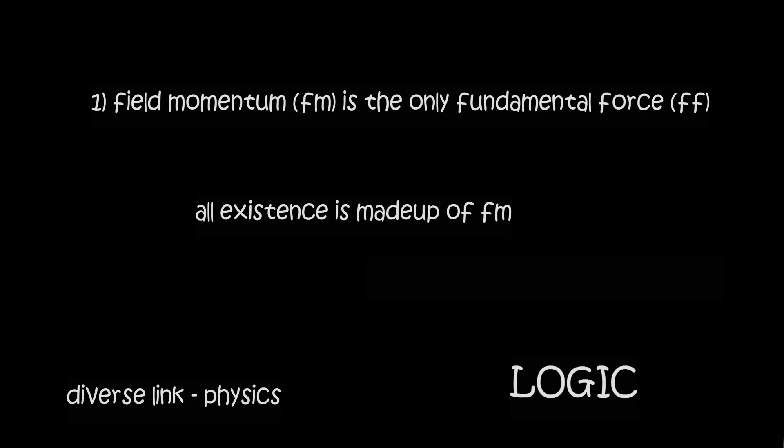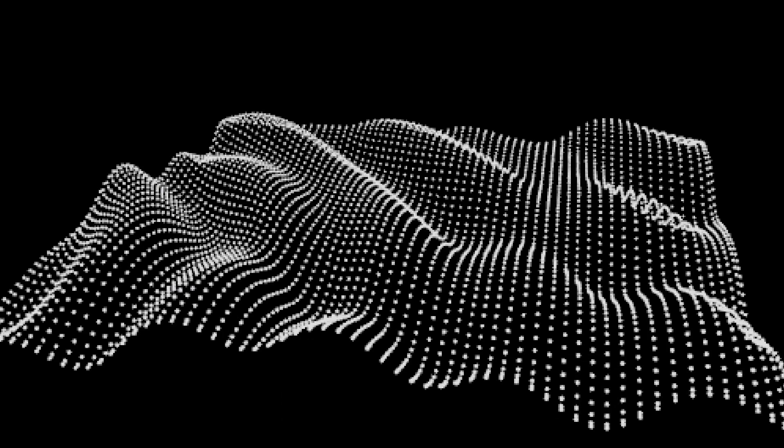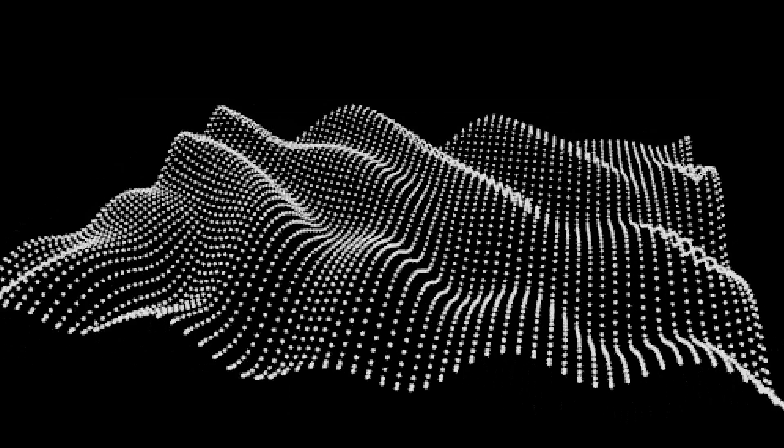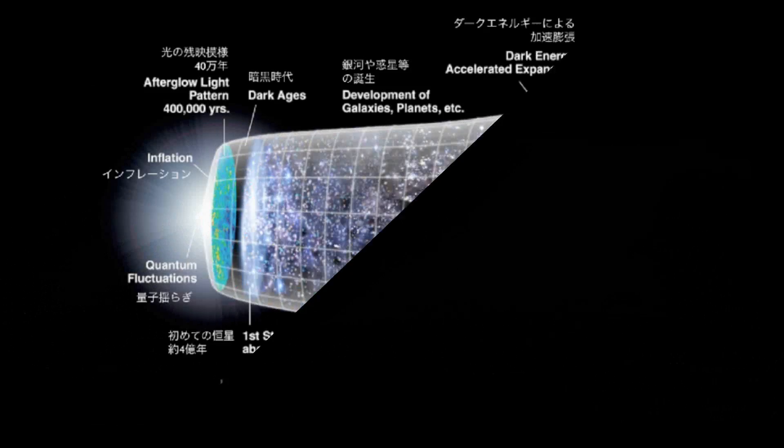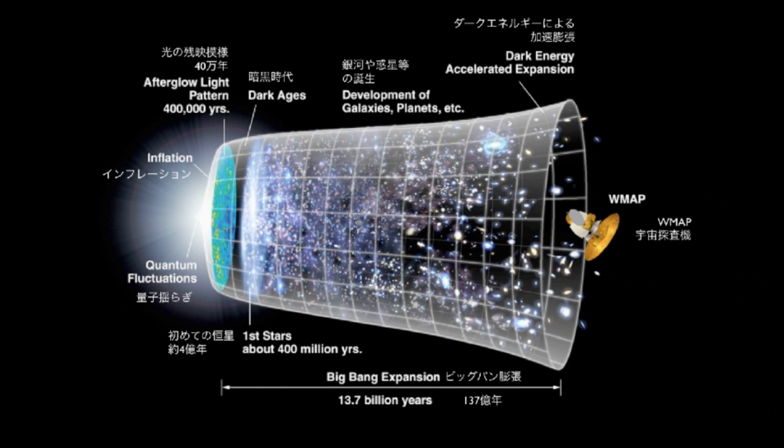All field momentum travels at light speed square constantly and perpetually. There can only be a single type of fundamental force. Any other definition is derivatives. A single universal fundamental force is necessary to explain Big Bang chronology, entropy reverse simulation, and answer common sense and logic.